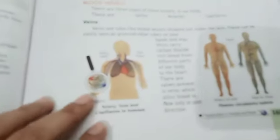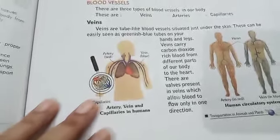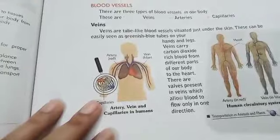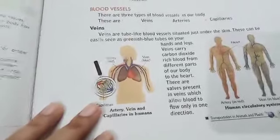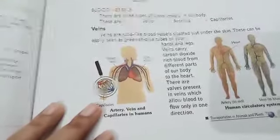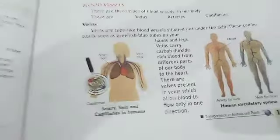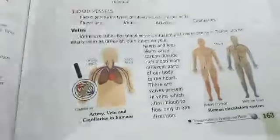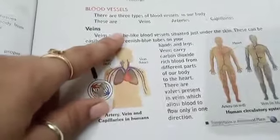Good morning students. 7th class science. We were reading chapter number 11, Transportation in Animals and Plants, and we were reading about the blood vessels.